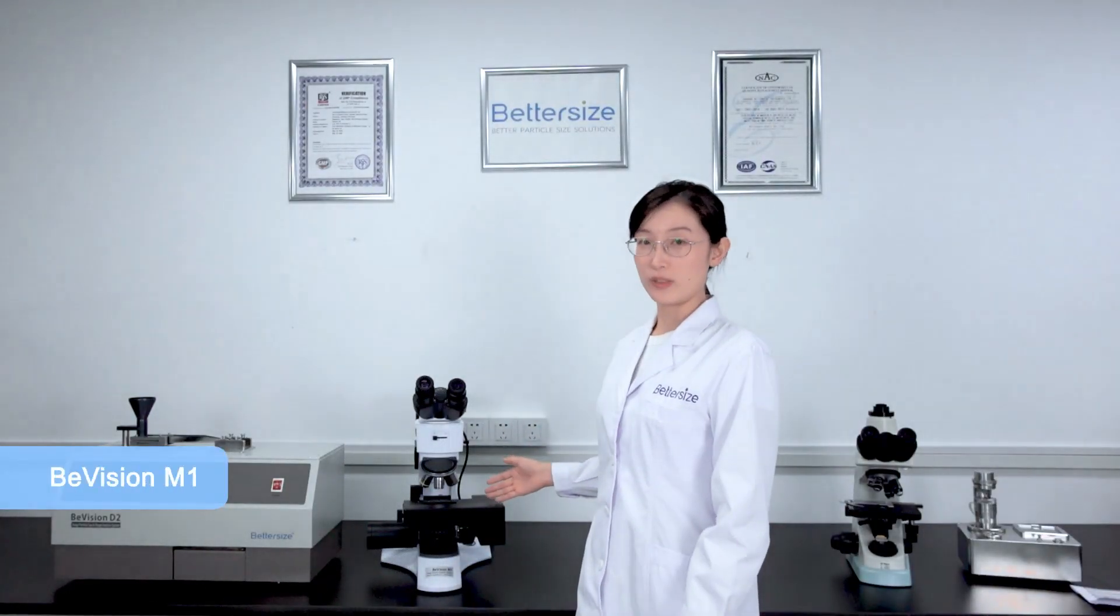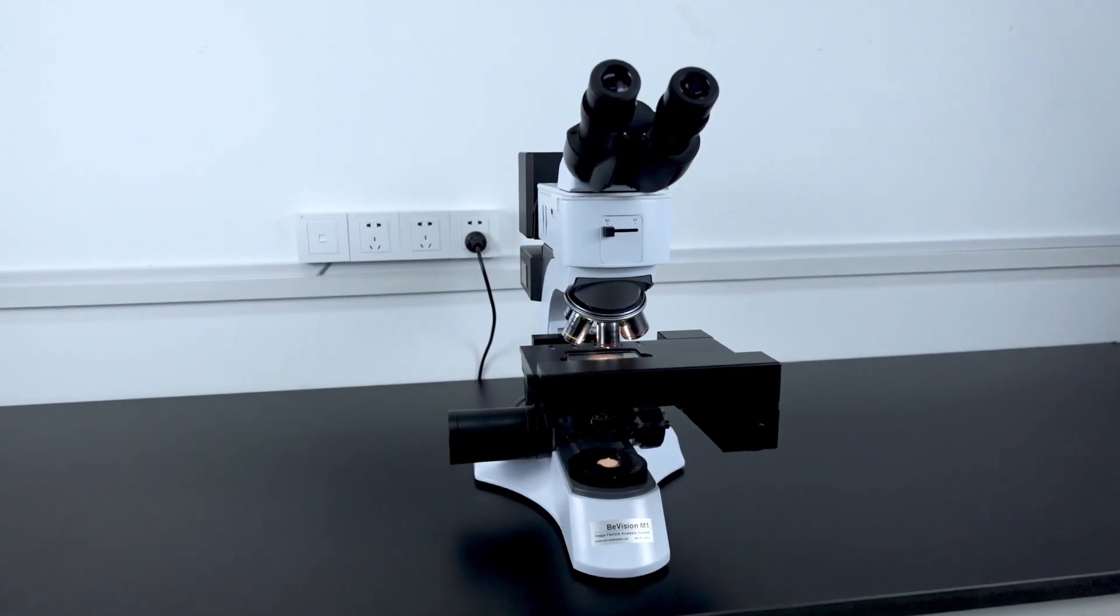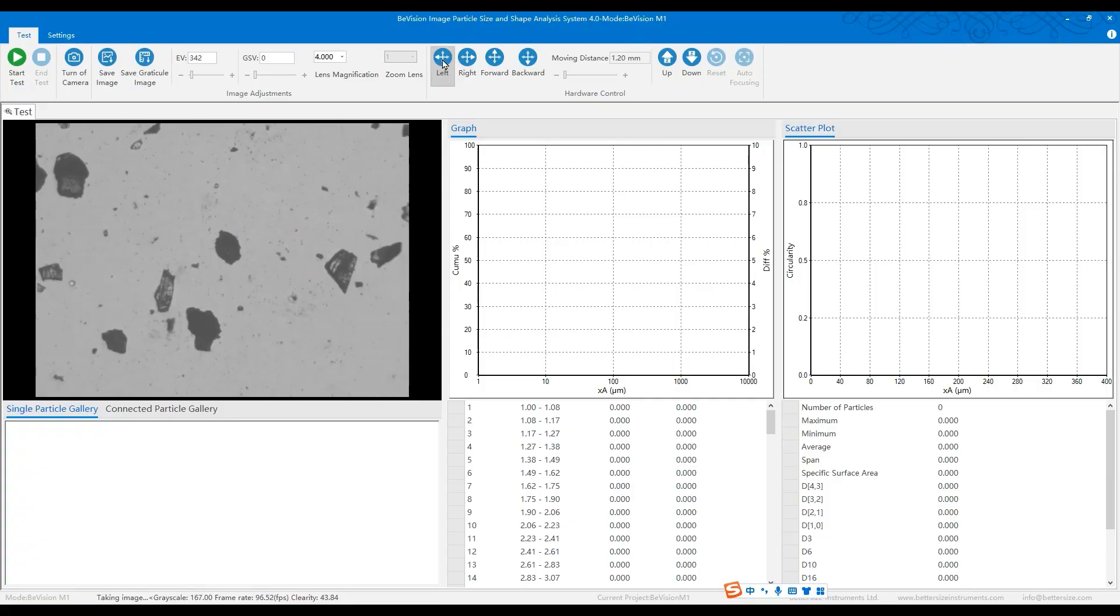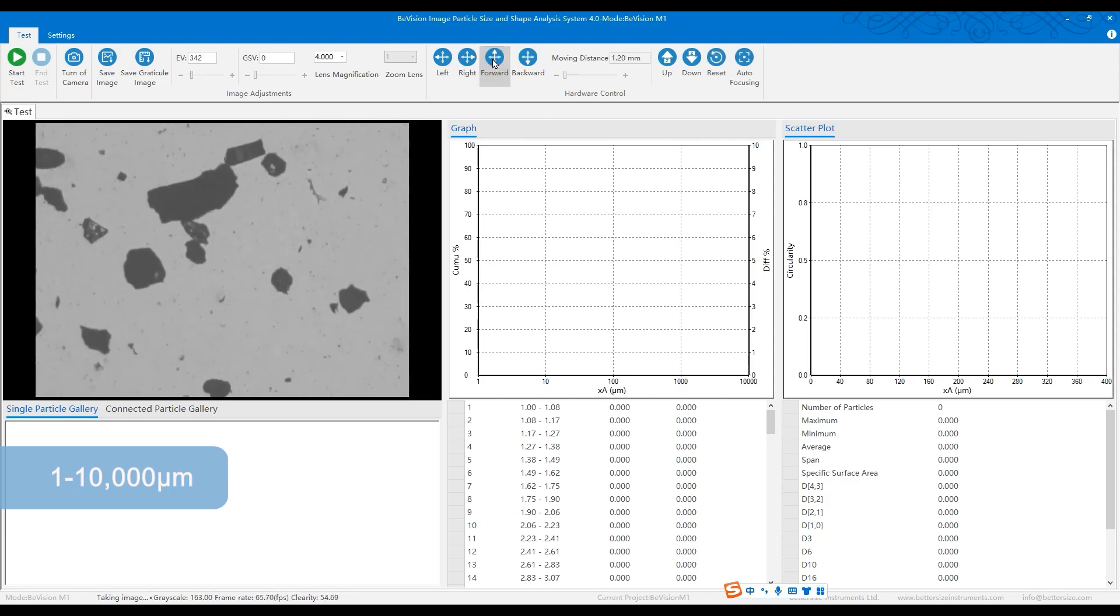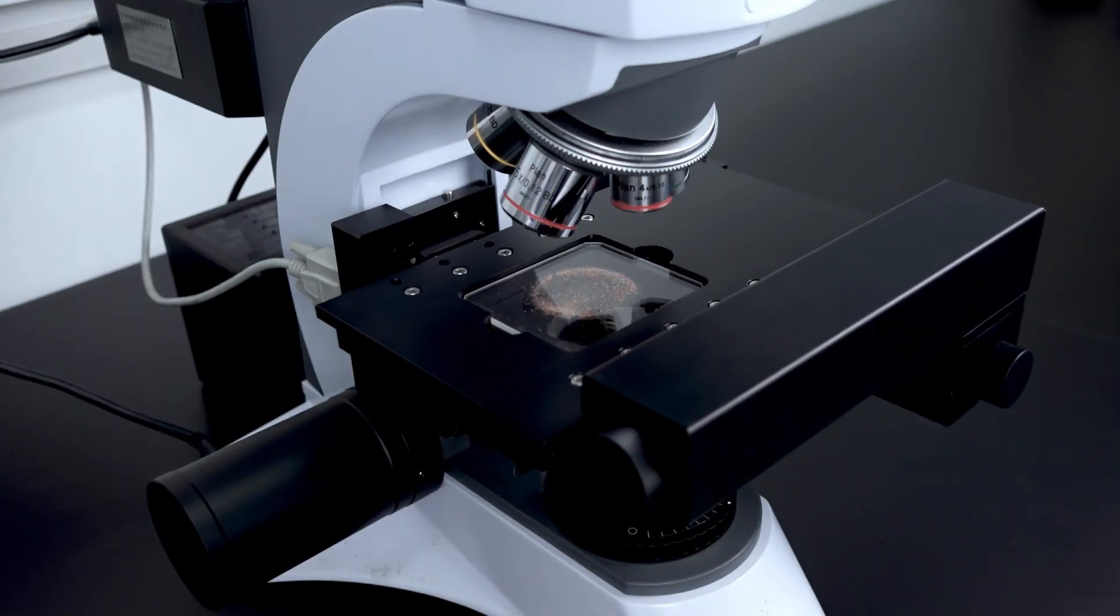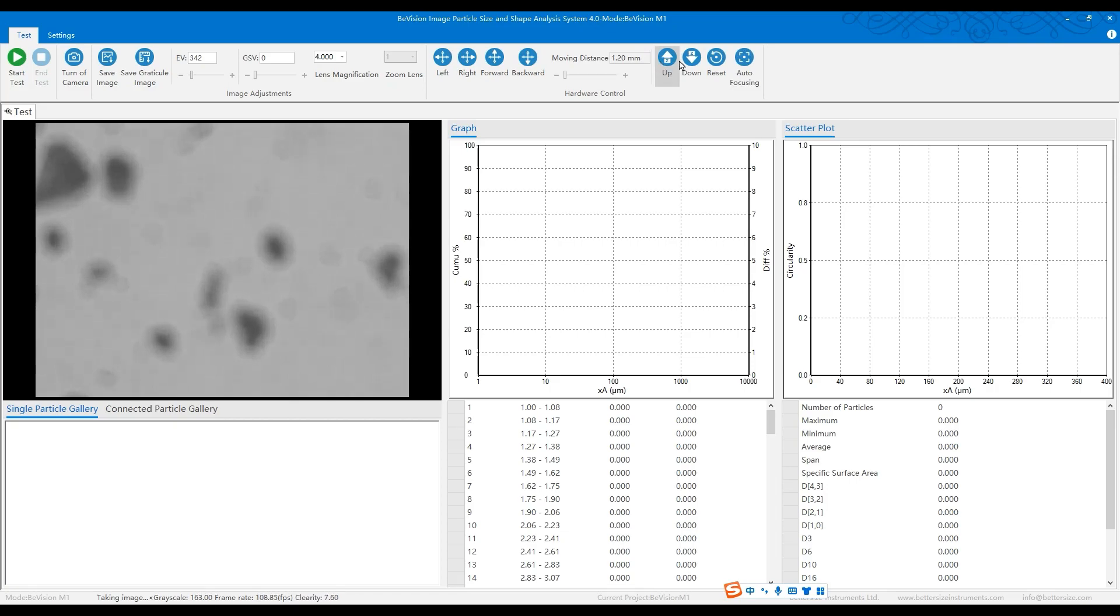Equipped with an auto-moving stage, the BeVision M1 can quickly inspect thousands of particles from one micrometer to 10,000 micrometers without manually moving the field of view while keeping the particles in focus.